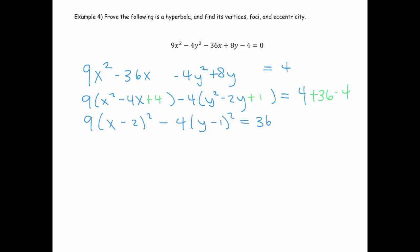And so now I know that I've completed the square. On the right, I've got 36. Now to put it in standard form, we want a 1 on the right side. So we're going to divide by 36. And that gives me x minus 2 squared over 4 minus y minus 1 squared over 9 is equal to 1. So I've proven that this is a hyperbola because it's now in its standard form with some shifts there.